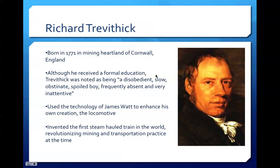Our fourth and final inventor of the time was Richard Trevithick, who was born in 1771 in the mining heartland of Cornwall, England. Like Watt before him, Trevithick did receive a formal education, although it must have been quite a process, as Trevithick was described as being a disobedient, slow, obstinate, spoiled boy — frequently absent and very inattentive. As true as this may have been, Trevithick turned out to be a brilliant engineer. He used the technology of those before him, most notably Watt's steam engine, to build his own invention, the locomotive. He began revolutionizing what some would call weak steam as used by James Watt, and used strong steam in Watt's engine to make stronger and thus more useful machinery.